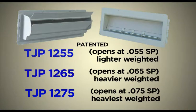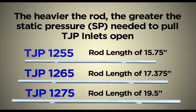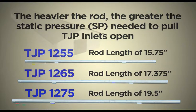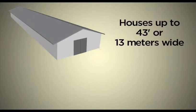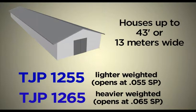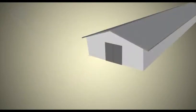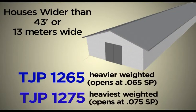You have three choices of TJP inlets: the TJP 1255, lighter weighted; the TJP 1265, heavier weighted; and the TJP 1275, heaviest weighted. The heavier the rod, the greater the static pressure needed to pull TJP inlets open. In houses up to 43 feet or 13 meters wide, use a combination of TJP 1255, lighter weighted, and TJP 1265, heavier weighted. In houses wider than 43 feet or 13 meters, use a combination of TJP 1265, heavier weighted, and TJP 1275, heaviest weighted.